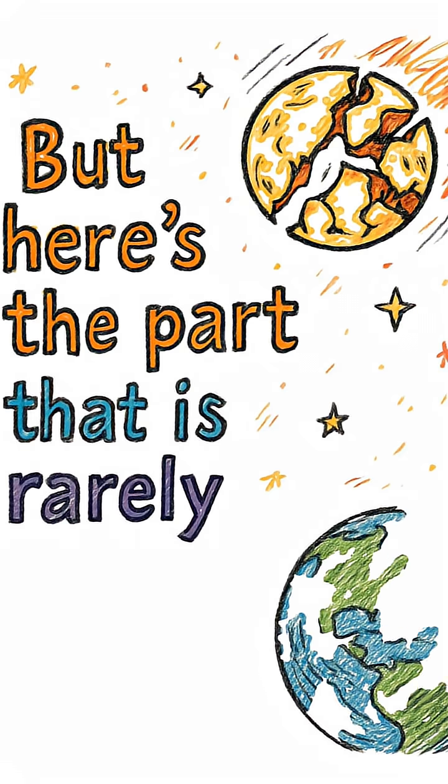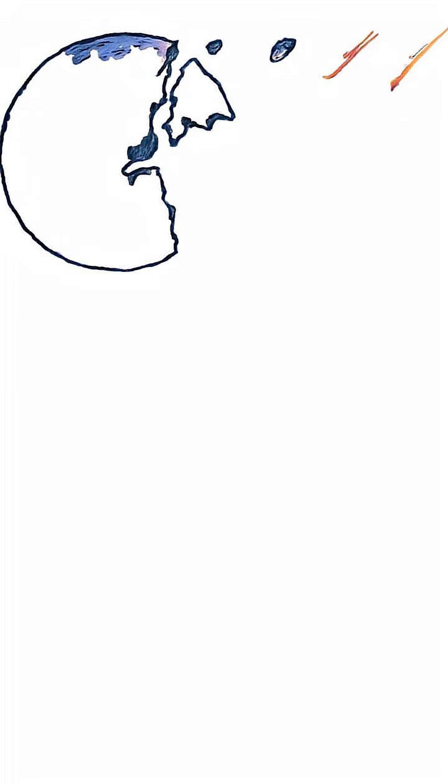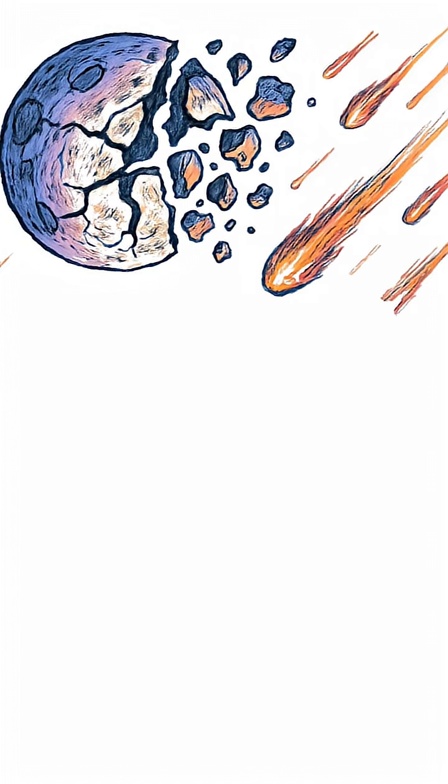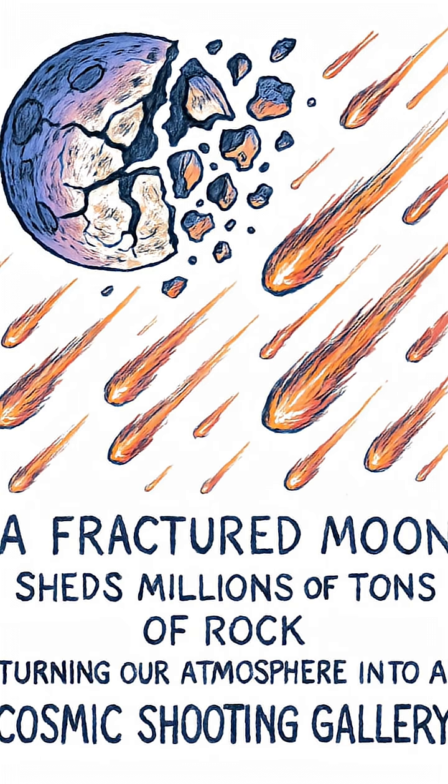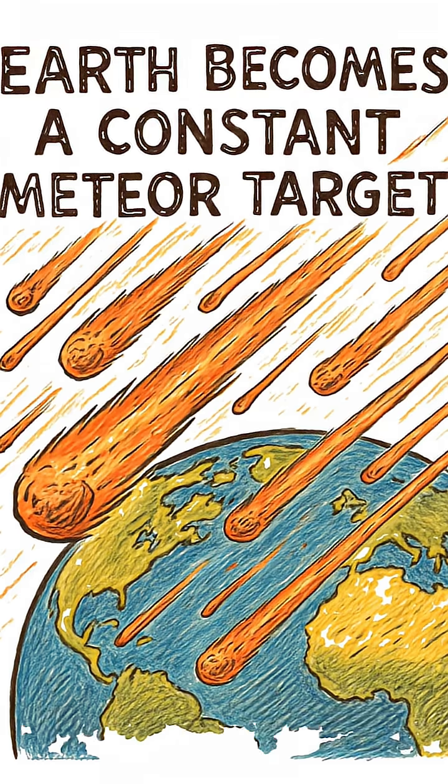But here's the part that is rarely discussed. A fractured moon would shed millions of tons of rock, turning our atmosphere into a cosmic shooting gallery. Earth becomes a constant meteor target.